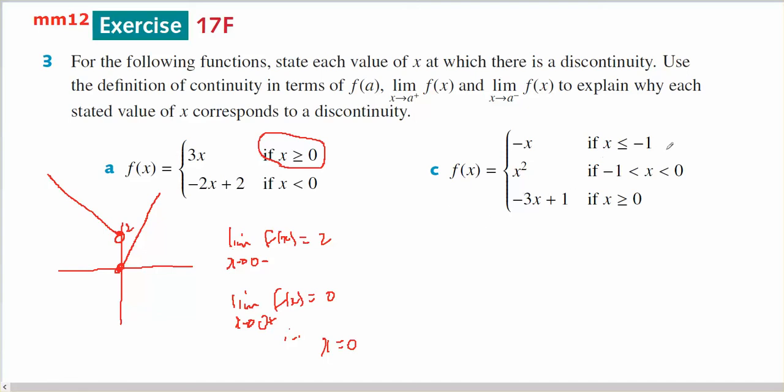In part c, I've got three different domains and three different rules. So there is the possibility on the two joins of having discontinuity. So bigger than, less than negative 1, there's negative 1, less than negative 1, it's minus x. That's what the graph is going to look like.